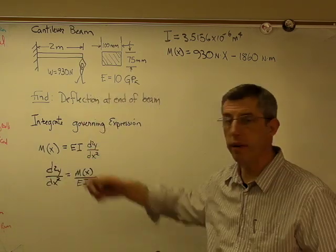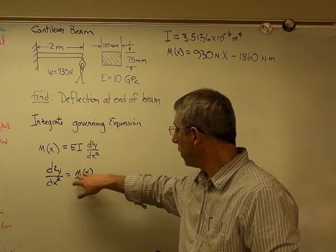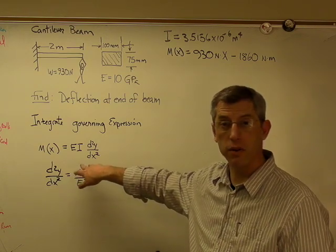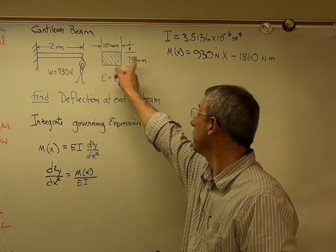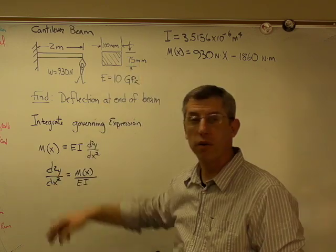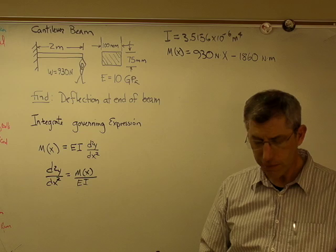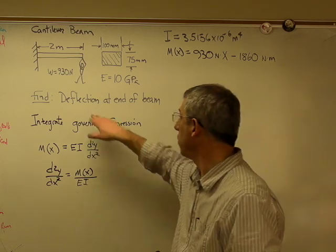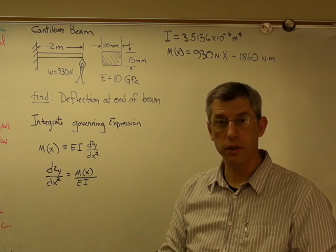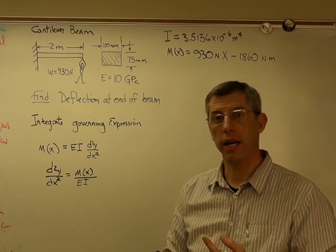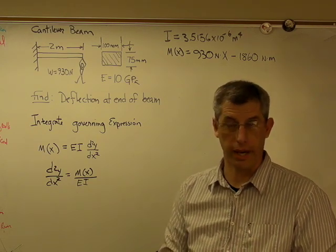All I did was divide through by EI. So we know what moment is. We figured out that using the shear moment diagram. We know E and I. Those are just numbers, those we have up here. And this thing over here, curvature, well, I don't want to know curvature. I want to know deflection.